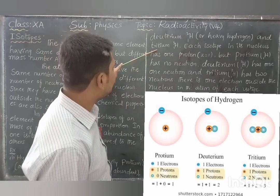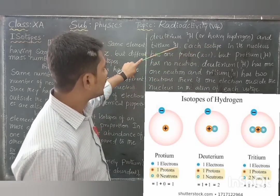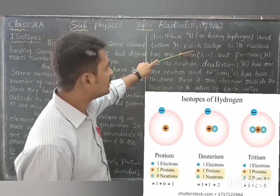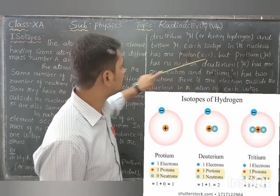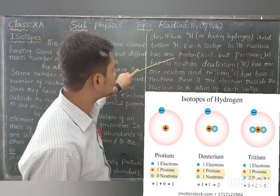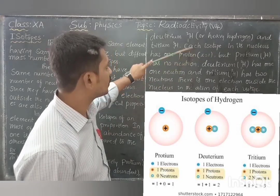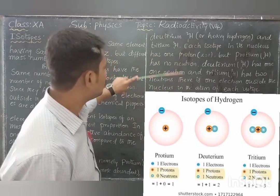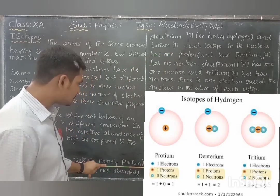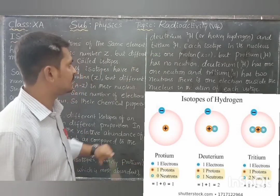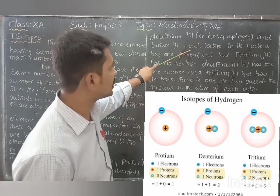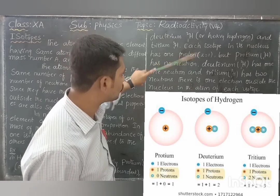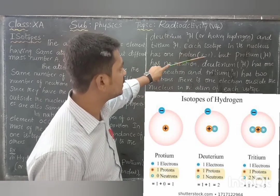And tritium, H-1-3. Each isotope in its nucleus has one proton — the atomic number is the same in each case, meaning Z equals to one.